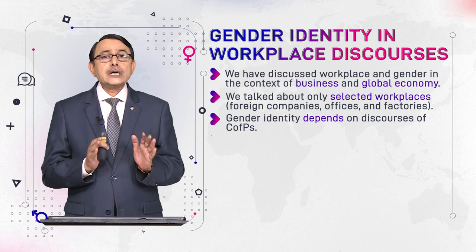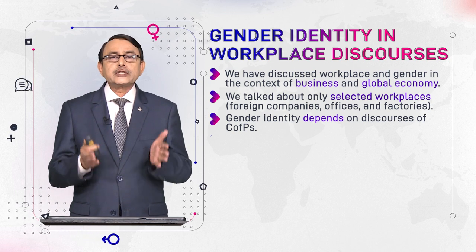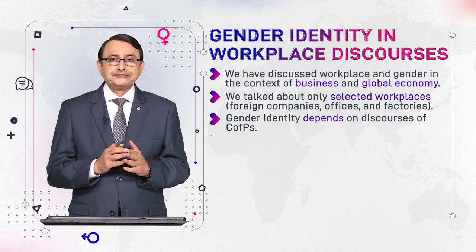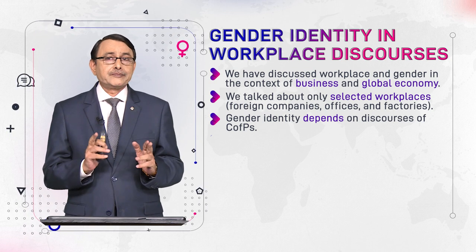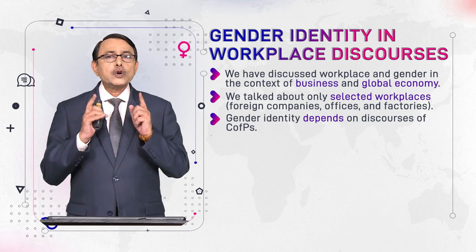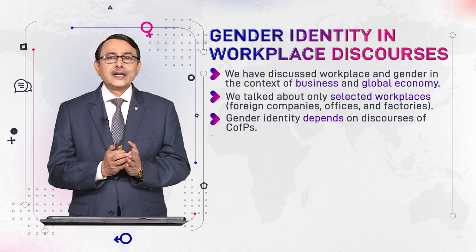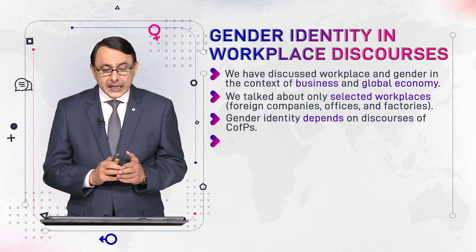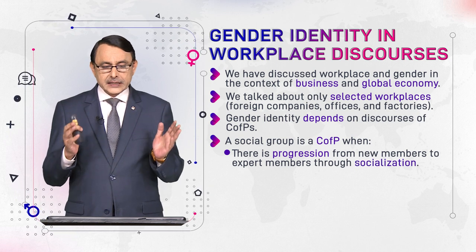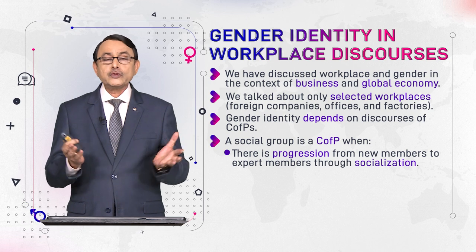First of all, we are establishing that workplace is also a Community of Practice (C of P). We talk about C of P first because Goffman has given the idea that when you want to apply Interactional Sociolinguistics (IS) procedure for analysis of interaction, you apply it on discourse produced at some community of practice. A social group is a C of P — a C of P exists when there is progression from new members to expert members.